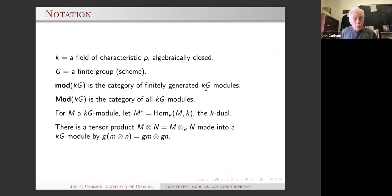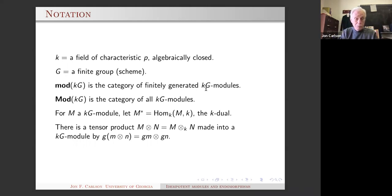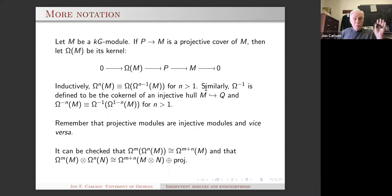Here's some notation: k is going to be a field of characteristic p, algebraically closed for simplicity. G is going to be a finite group — it could also be a group scheme in some places. We have two categories: the module category of finitely generated modules and all modules. Every finitely generated module has a dual, and we have a tensor product given by the Hopf algebra structure. If it's a group, the Hopf algebra structure is just the diagonal.